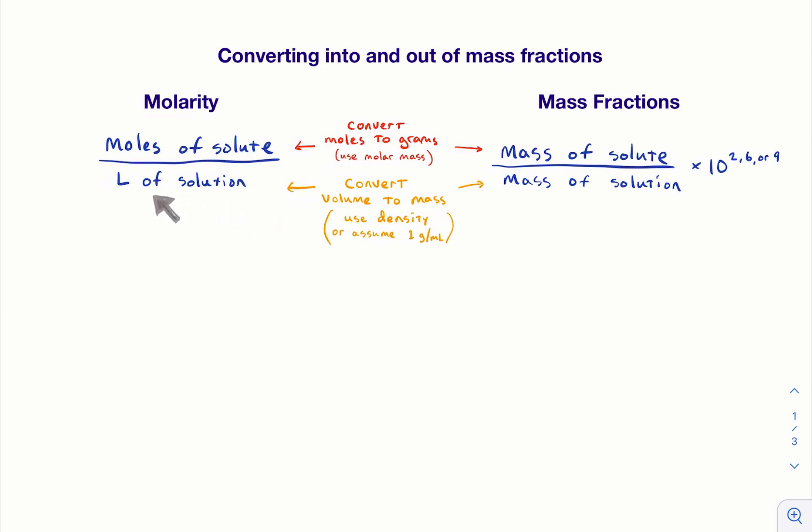Okay, for the denominator, right over here is liters. Over here is the mass of solution, and so we need to convert volume, starting in liters, to a mass. And so the way to do that is with the density. So if you know the density of the solution, great. You can take the volume of the solution, you can multiply it by the density, and then it gives you the mass.